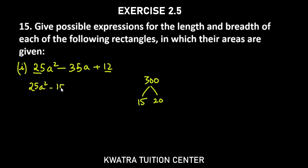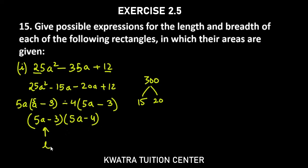Write it so that minus 35 comes easily. Put minus minus, so it becomes minus 15a minus 20a plus 12. From the first two terms, take 5a common. In the bracket what remains is 5a - 3. In the last terms, take 4 common. So it is 4 here. What remains is 5a - 3. Here also 5a - 3 will come. So our two factors are 5a - 3 and 5a - 4. Any of these can be length or breadth.